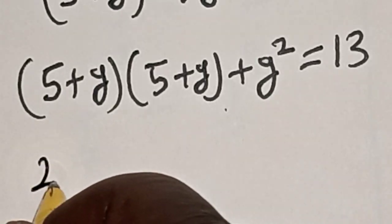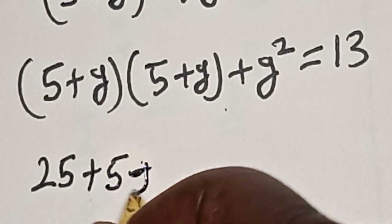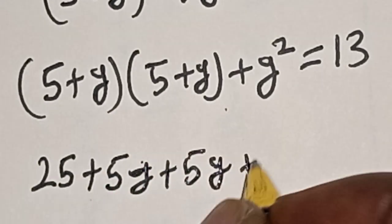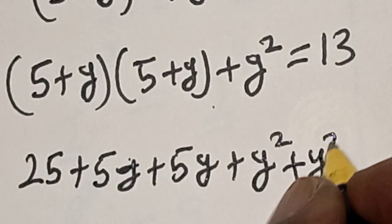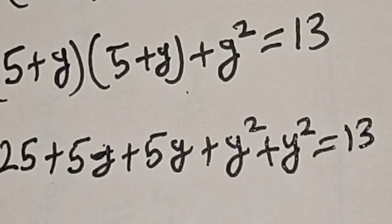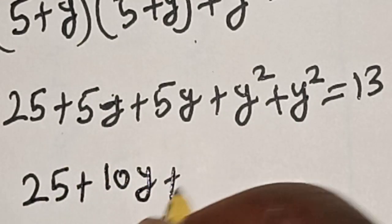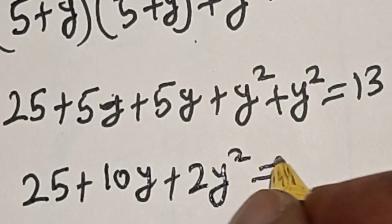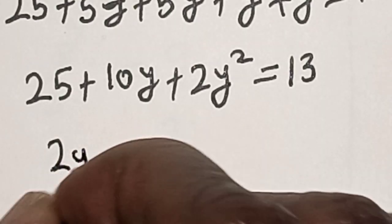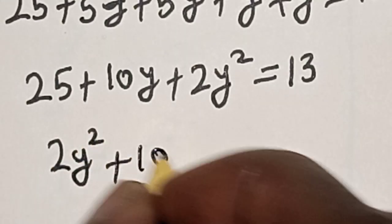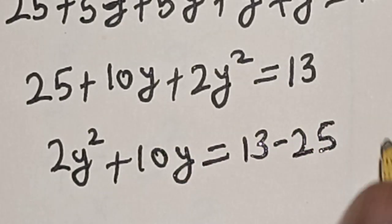5 times 5 is 25, plus 5y plus 5y, plus y squared, then plus y squared is equal to 13. So we have 2y squared plus 10y plus 25 is equal to 13.